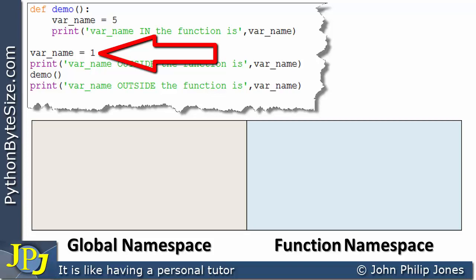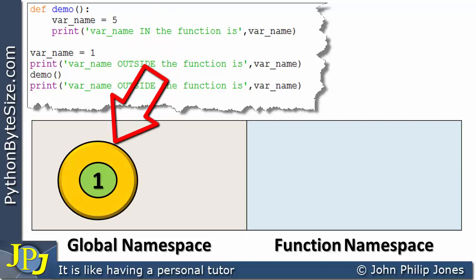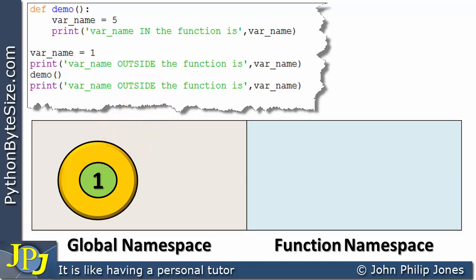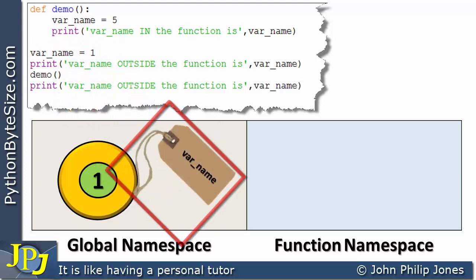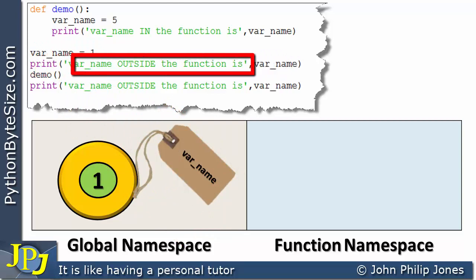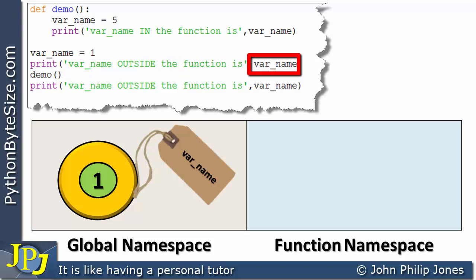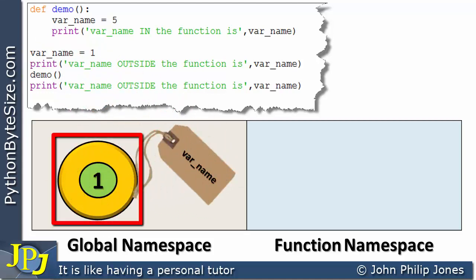The first line executes and creates an instance of the integer class with the value 1. That instance appears in the global namespace, labeled var_name. When the next print statement executes, because it appears in the global area, Python goes to the global namespace object — so 1 is displayed.